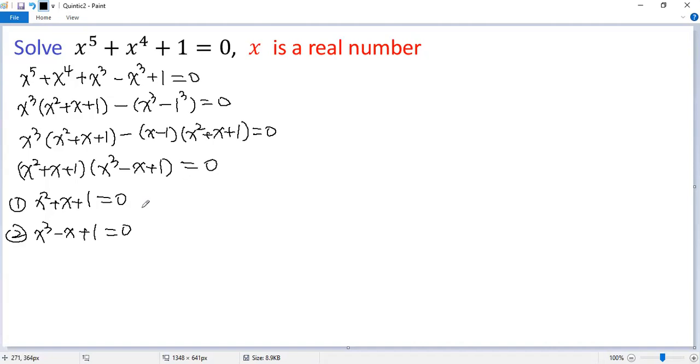The first equation doesn't have a real solution, because the discriminant delta equals 1 squared minus 4 times 1 times 1 equals negative 3, less than 0. So no real solution.